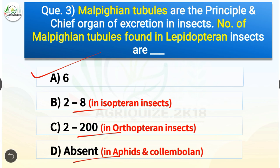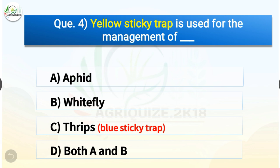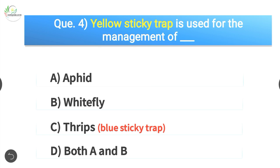Question number four: yellow sticky trap is used for the management of — options are aphid, whitefly, thrips, or both A and B. The correct answer is option D, both A and B. Yellow sticky trap is used for the management of both aphids and whiteflies, whereas blue sticky trap is used for thrips.